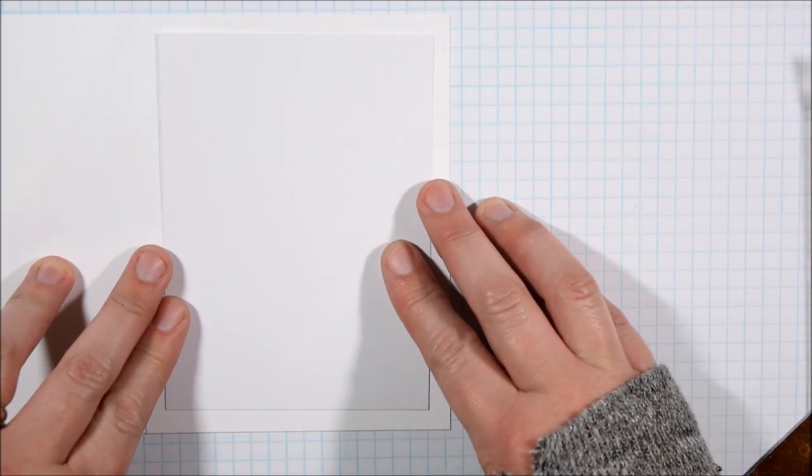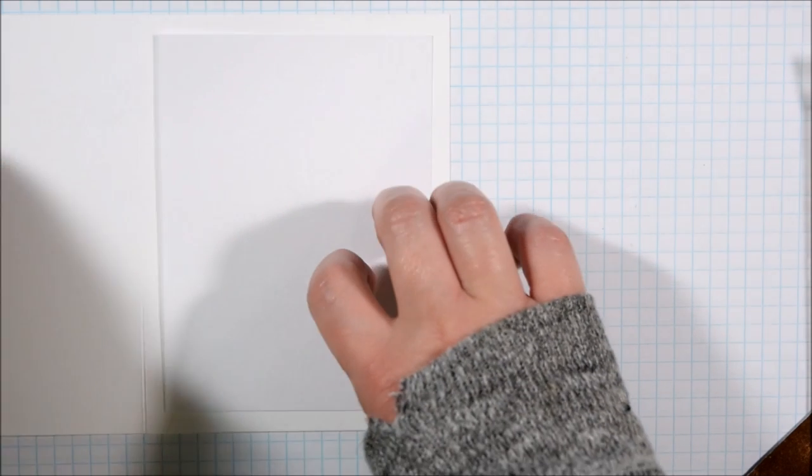So I have my card base and then I have a white cardstock panel that's cut about a quarter to a half an inch smaller than my card front because this piece is going to hide the string that is part of the spinner.